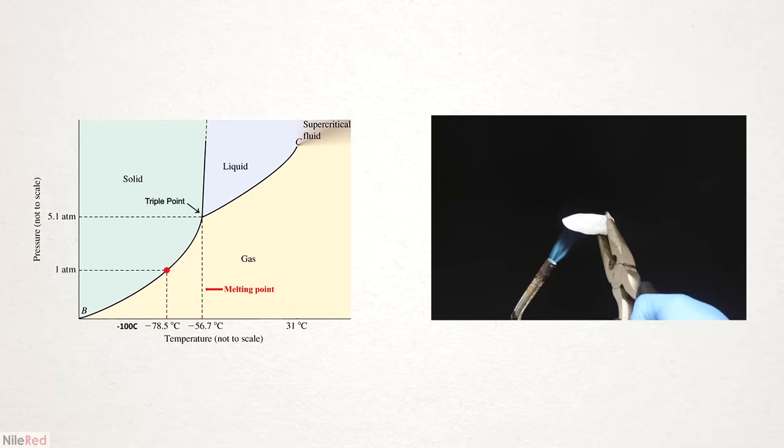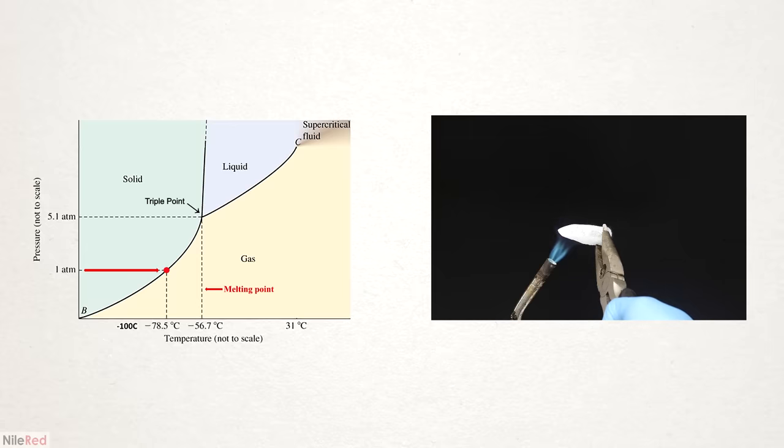This occurs because the melting point is dependent almost entirely on the substance alone, whereas the boiling point depends on the substance as well as the outside pressure. It just so happens that the atmospheric pressure we live in places it along this line.